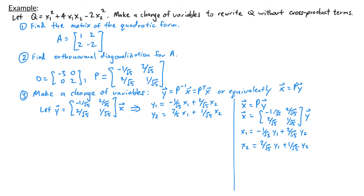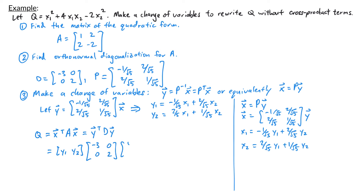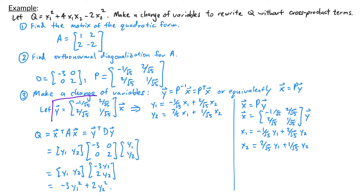What we've worked out is that our quadratic form Q, which was x transpose A times x, can now be rewritten as y transpose D times y. That's the row vector (y1, y2) times the diagonal matrix D with entries negative 3 and 2, times the column vector (y1, y2). Multiplying this out gives negative 3y1 squared plus 2y2 squared. Notice that with this change of variables, we no longer have any cross product terms.